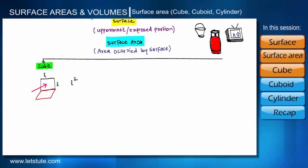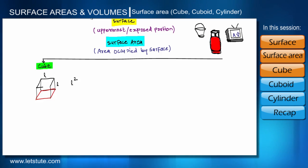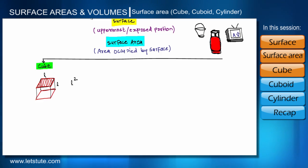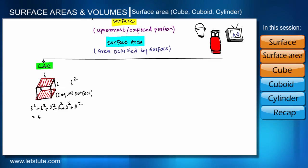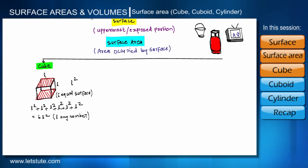Let us draw the walls: second wall, third wall, fourth wall at the front, and the top surface is the last surface of this box. In the shape of a cube there are total six surfaces, all having the same area L² — top, bottom, and four walls. So the total surface area would be L² added six times, giving us 6L². Therefore, 6L² is the total surface area of a cube having side length L.